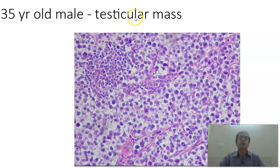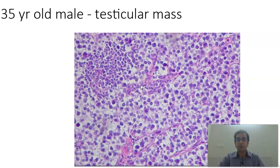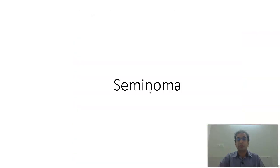A 35-year-old male patient with testicular mass. What you find is nests of glycogen-rich cells with a clear cytoplasm, having fibrovascular septae rich in lymphocytes and plasma cells. This is likely to be a testicular tumor — specifically a seminoma.